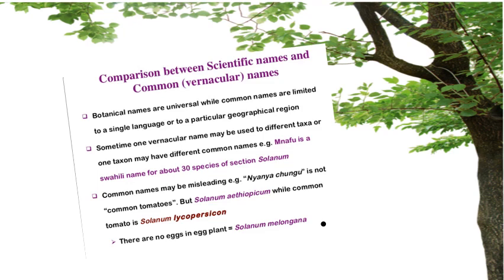Now we have a comparison between scientific names and common, or vernacular, names. Botanical names are universal because they are used worldwide, while vernacular names are very restricted to a single language, a particular area, or region. Sometimes one vernacular name may be used for different taxa, or a taxon may have different common names. For example, 'nafu' is a Swahili name for about 30 species of section Solanum.